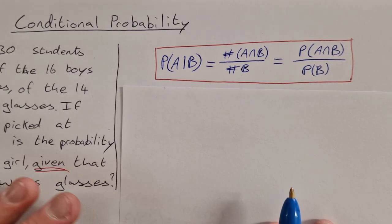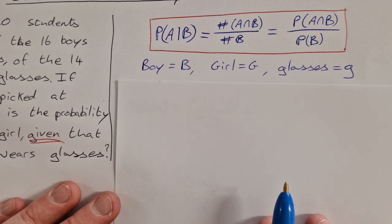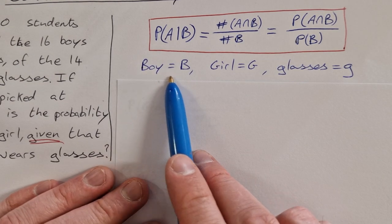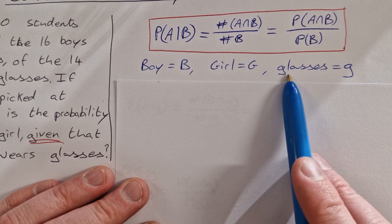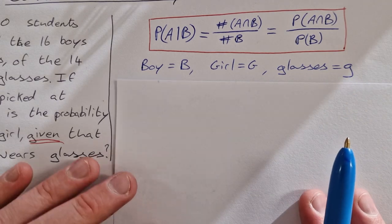So I'm going to do it both ways here. In this question I'm letting boys equal big B, girls equal big G, and glasses equal to small g.